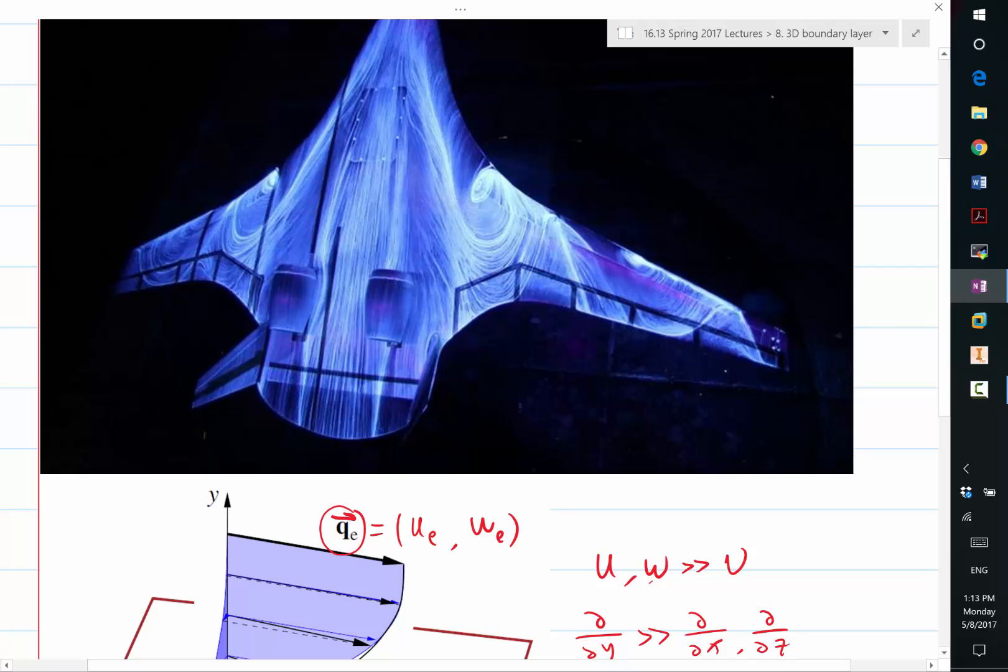So that's the way you interpret an oil flow like this. You shouldn't automatically assume that the flow outside the boundary layer is in the same direction. It may be quite different.